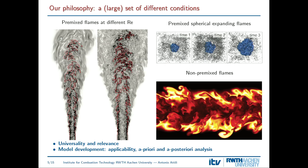Our philosophy is to have as many cases as possible to test our understanding. We have two different premix flames at different Reynolds numbers, a premix flame in a spherical expanding configuration, and a typical non-premix jet flame. Today I'll talk about these two cases and possibly a couple more if time permits. The goal is to check universality and relevance for applications — for example, whether what we learn at Reynolds numbers orders of magnitude smaller than real applications can be extrapolated to an engine.